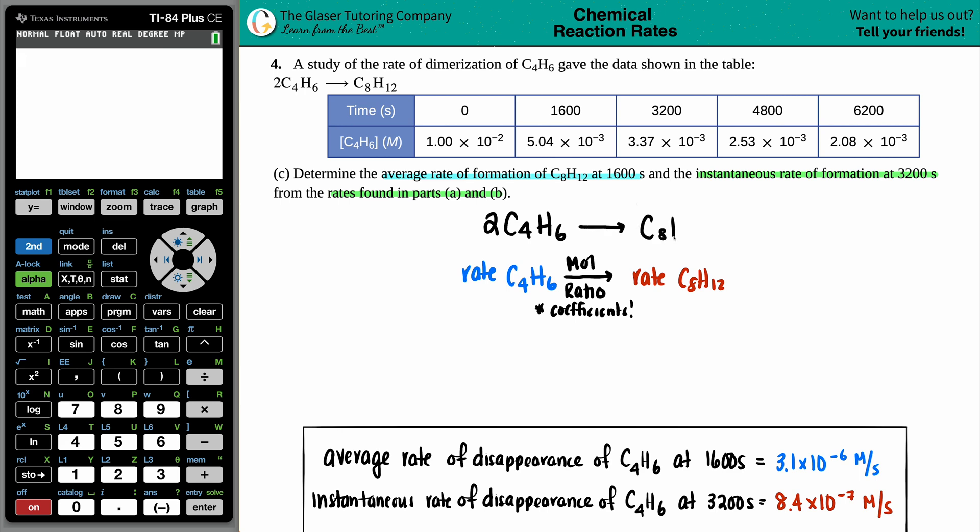Always start with what you're given. Let's do the average rate of formation at the 1600, so we want the rate of the C8H12 at the 1600 second mark. Well, we're just converting from one rate to another rate and that's just using your mole ratios. We take our rate of disappearance of C4H6 which was 3.1 times 10 to the negative 6 molarity per second of the C4H6.